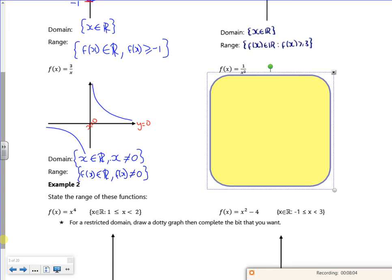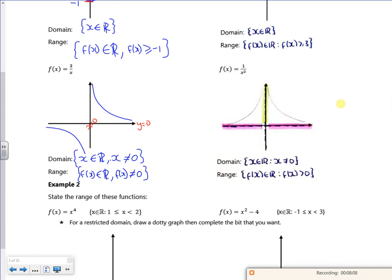1 over x² looks like a volcano. If you look, the domain is everything but the range is just bigger than zero. Note that that one there is bigger than or equal to, but this one here is just bigger than because of the asymptote.